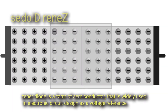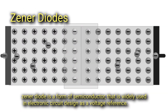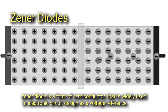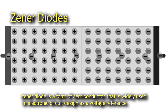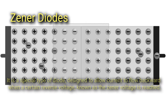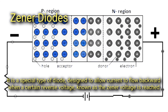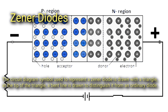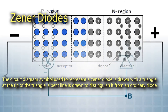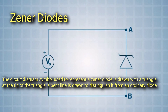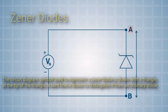Zener diode: this is a form of semiconductor diode widely used in electronic circuit design as a voltage reference. It is a special type of diode designed to allow current to flow backward when a certain reverse voltage, known as the Zener voltage, is reached. The circuit diagram symbol for a Zener diode is drawn with a triangle, and at the tip of the triangle, a bent line is drawn to distinguish it from an ordinary diode.